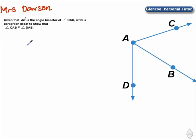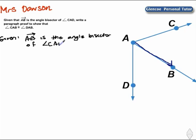Let's take a look at the picture. Ray AB is an angle bisector of angle CAD. We are given the information that ray AB is the angle bisector of angle CAD. What does that tell us?